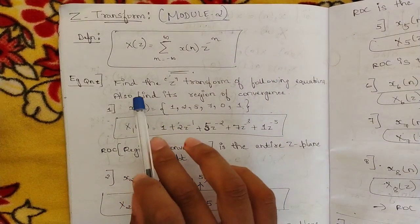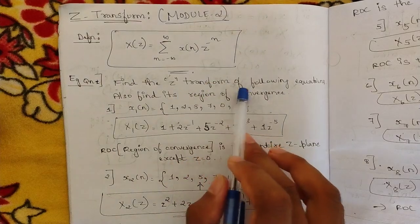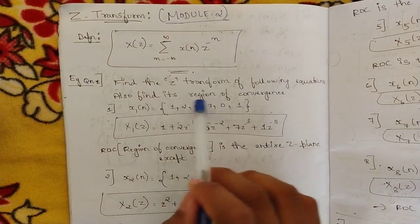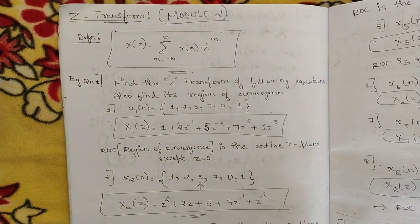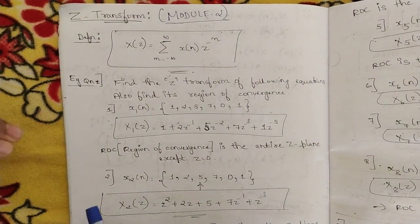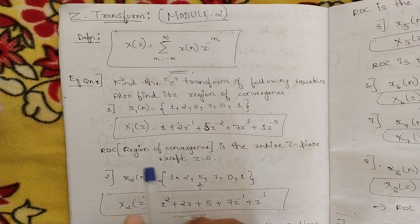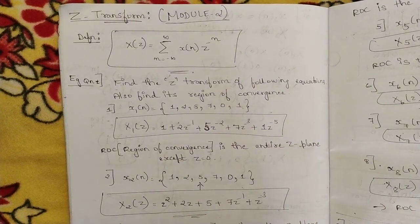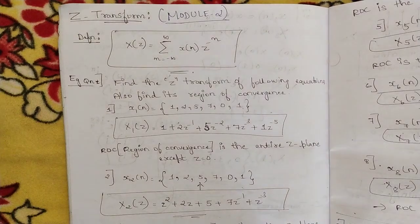The question asks us to find the Z transform of the following sequences and also find the region of convergence, or ROC. The ROC is the entire Z plane except Z equal to 0. Except the value of Z equal to 0, all other values are the region of convergence.